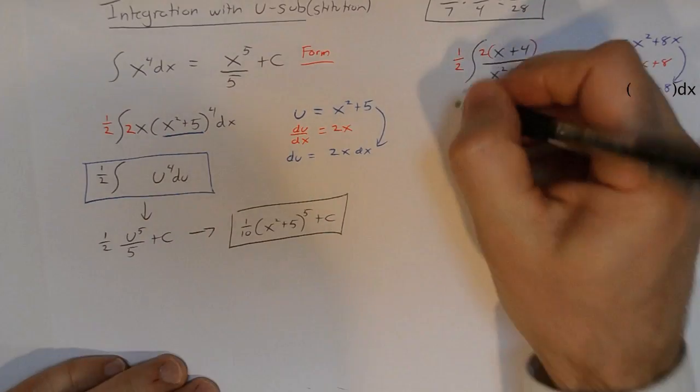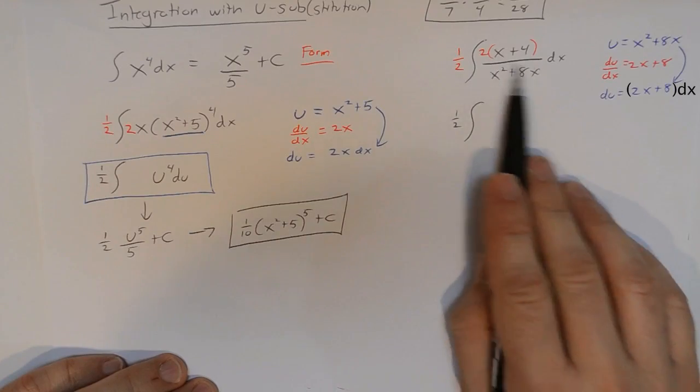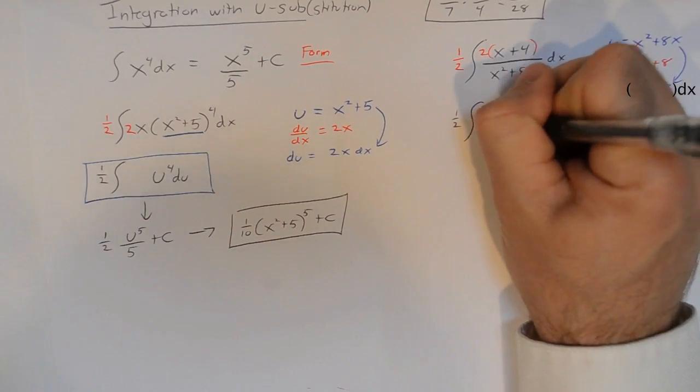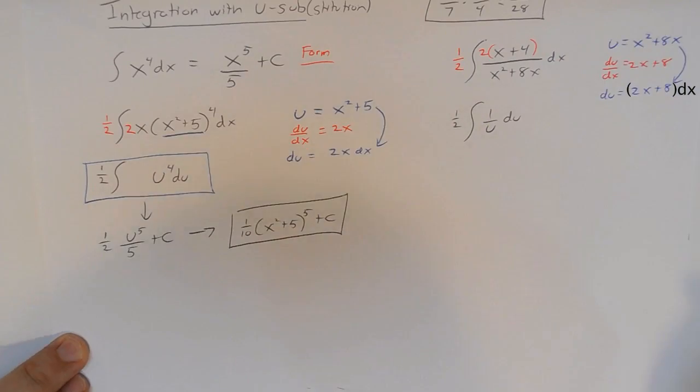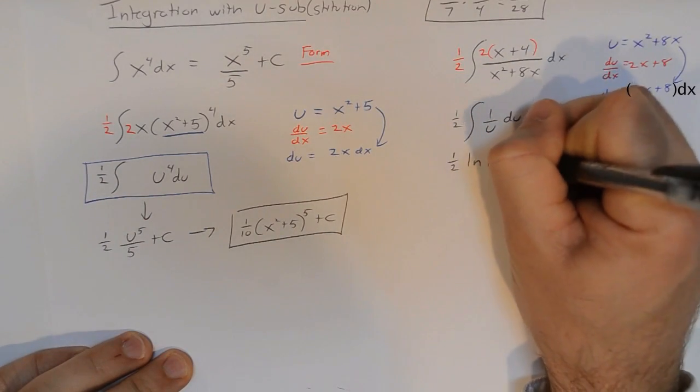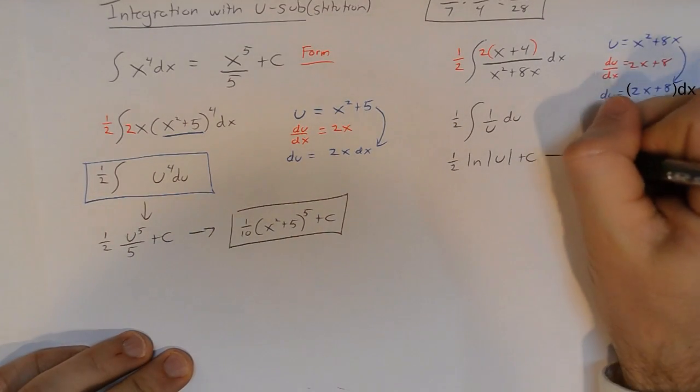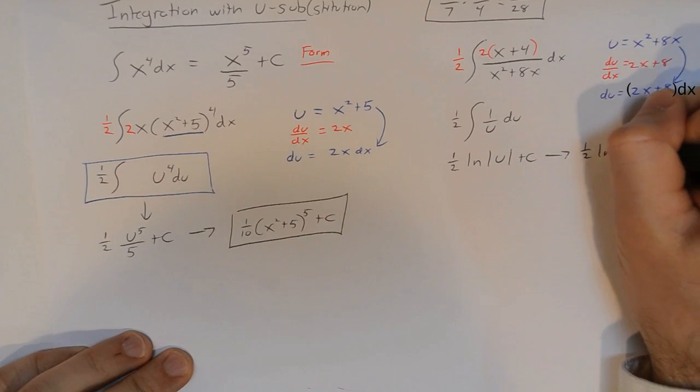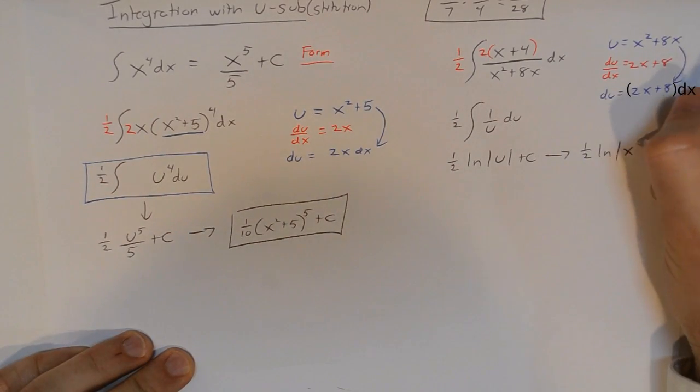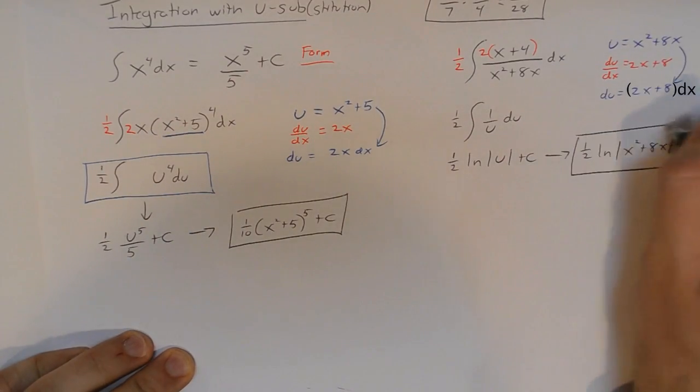And now I can rewrite this integral as 1 half the integral of 1 over u du. And that's one of the forms that you should recognize. The integral of 1 over u du is just ln absolute value of u. So, this becomes 1 half ln the absolute value of u plus c. And since u is x squared plus 8x, that just becomes 1 half ln absolute value x squared plus 8x plus c. And that would be the answer for that integral.